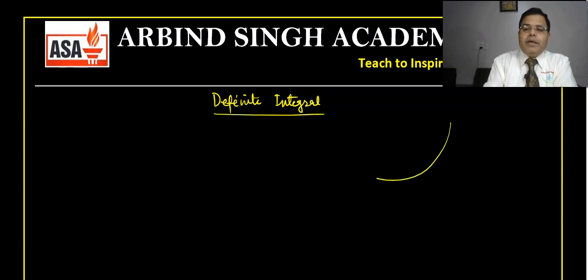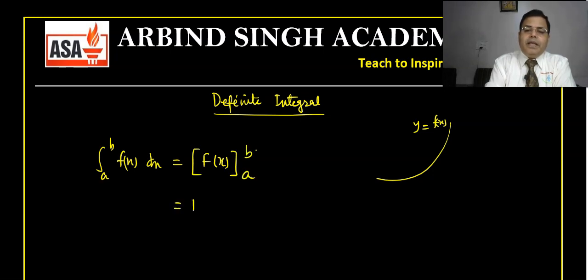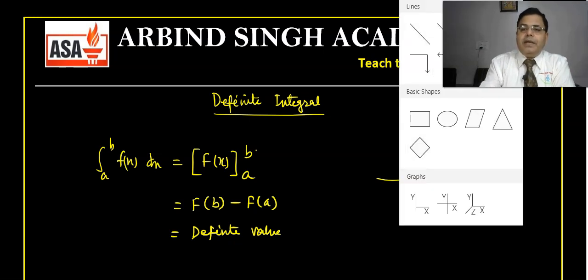If y = f(x) is any function, then integration of the form ∫(a to b) f(x) dx will give a result F(b) minus F(a) — that is a fixed value, and therefore we get a definite value. There is no constant C here, and hence this is called a definite integral.